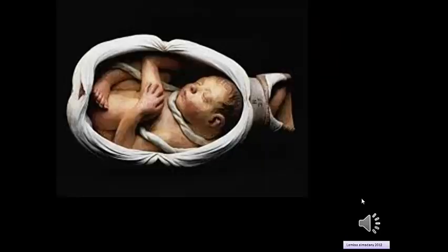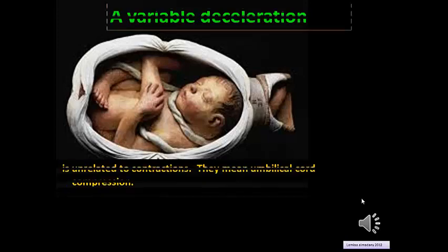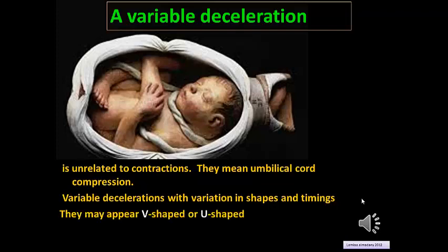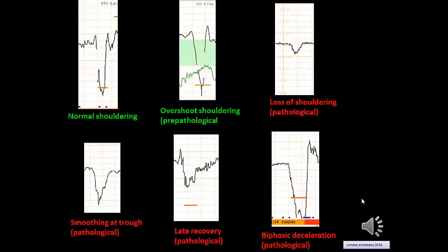Variable decelerations are not related to uterine contractions but indicate umbilical cord compression. They may be V or U shaped. Some types are benign, such as normal shouldering and overshoot shouldering. Others are pre-pathological, while some are pathological — including loss of shouldering, smoothing at trough, late recovery, and biphasic deceleration.